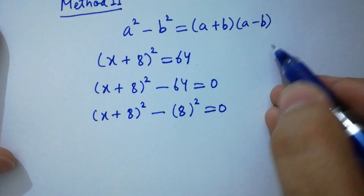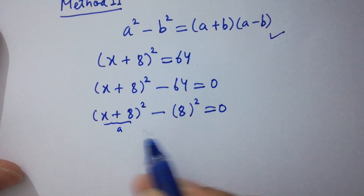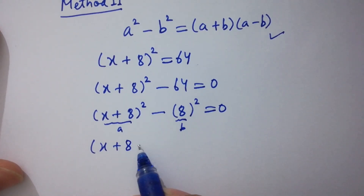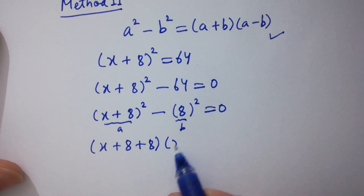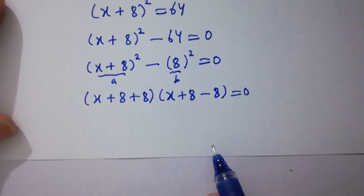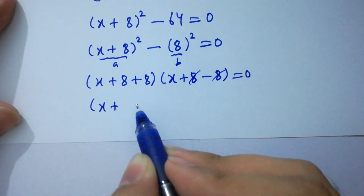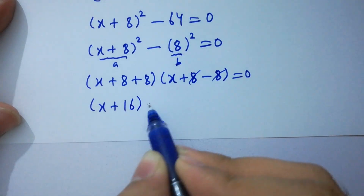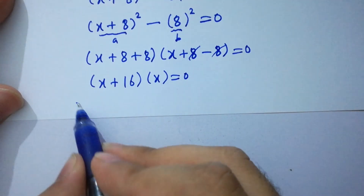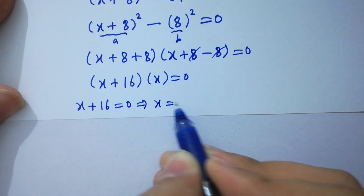So this is like a² − b² — apply this formula. We identify a = (x + 8) and b = 8. We get (x + 8 + 8)(x + 8 − 8) = 0. The 8s cancel in the second factor, giving (x + 16)(x) = 0. So x + 16 = 0 gives x = −16, and x = 0.